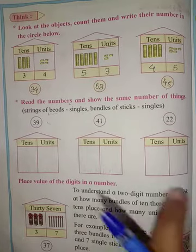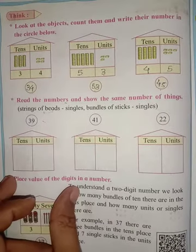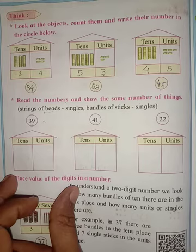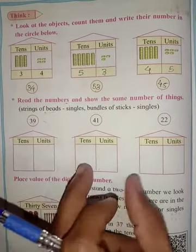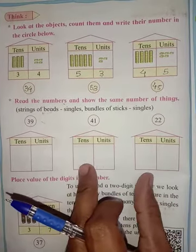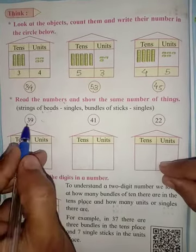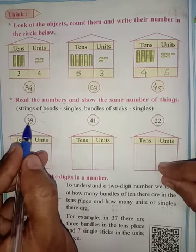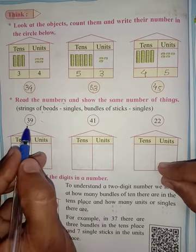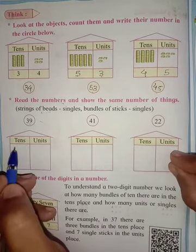The first number is 39. 39 means the units digit is 9 and the tens digit is 3. Three tens means 30.